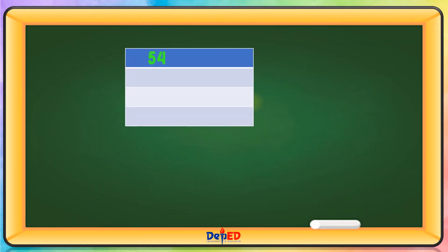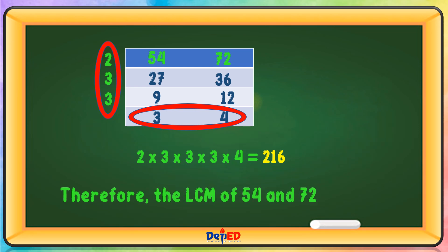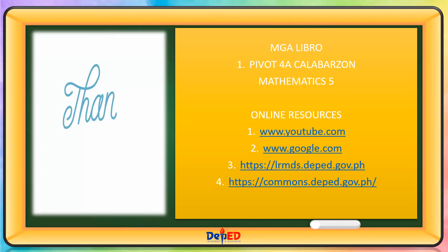We have 54 and 72. Using prime number 2: 54 divided by 2 equals 27, 72 divided by 2 equals 36. Using prime number 3: 27 divided by 3 equals 9, 36 divided by 3 equals 12. Again by 3: 9 divided by 3 equals 3, 12 divided by 3 equals 4. Multiply the prime numbers and remaining quotients: 2 times 3 times 3 times 3 times 4 equals 216. Therefore, the LCM of 54 and 72 is 216. Thank you for watching. Till our next mathematics lesson. Goodbye!